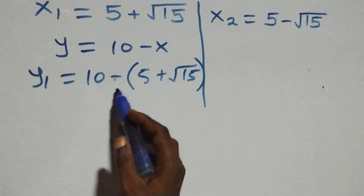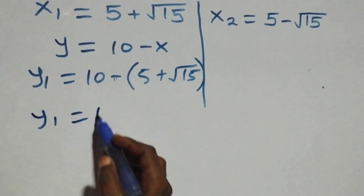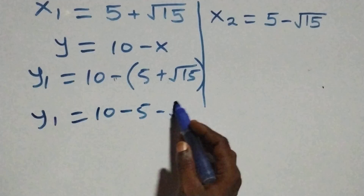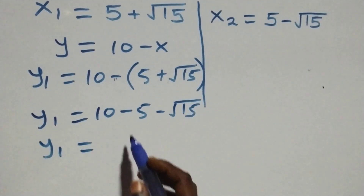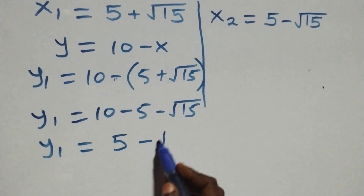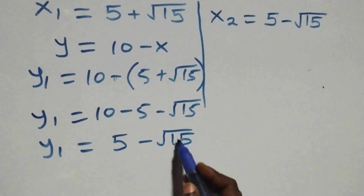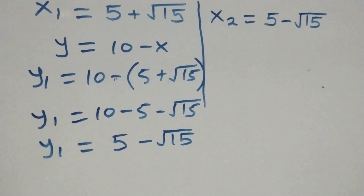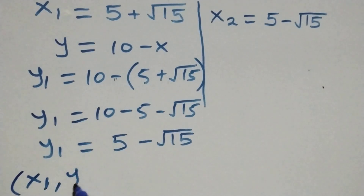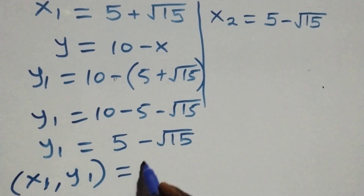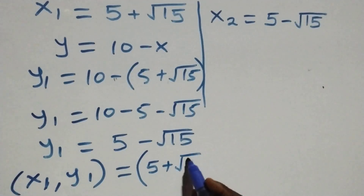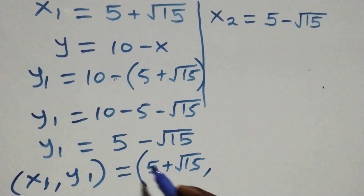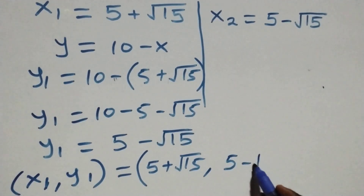For y₁, we substitute x₁: y₁ equals ten minus bracket five plus root fifteen. Opening the bracket gives y₁ equals ten minus five minus root fifteen, so y₁ equals five minus root fifteen. Therefore the first solution set is x₁ comma y₁ equals five plus root fifteen, comma, five minus root fifteen.